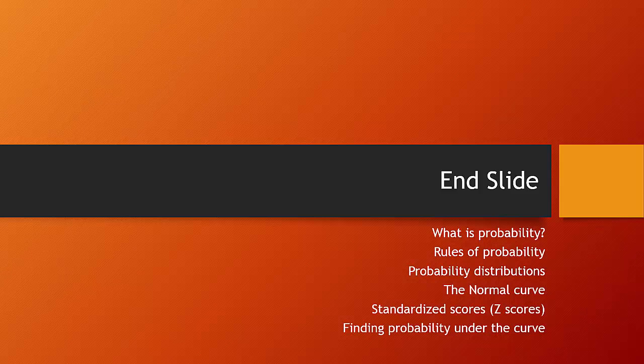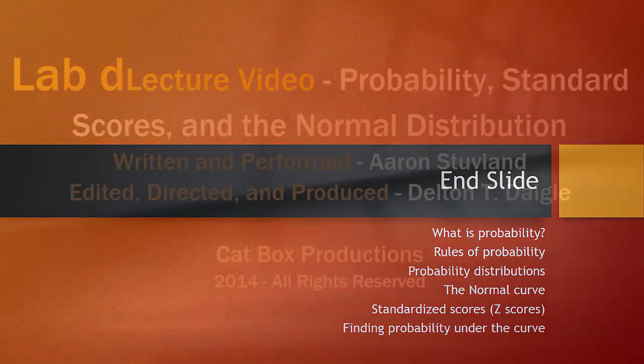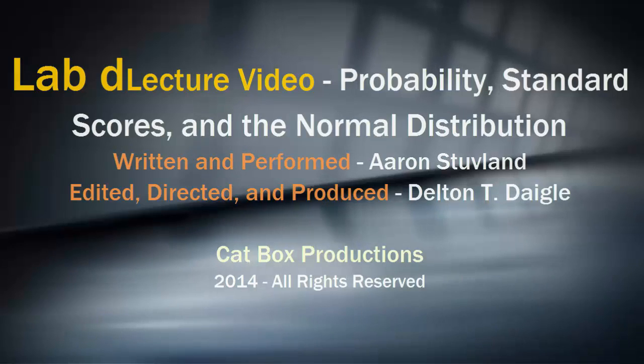So what we've covered in this lecture is a basic understanding of probability and some of the rules of probability. We've taken a look at probability distributions, particularly the normal curve. We started to develop some understanding of standardized scores and played around with finding probability under the curve. Let's move on to our next video, which is going to be on the central limit theorem, the law of large numbers, and how we can do statistical inference — it's the basis of the standard error. We'll see you soon.